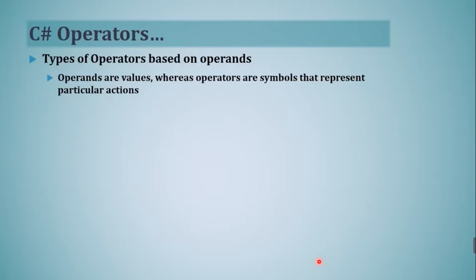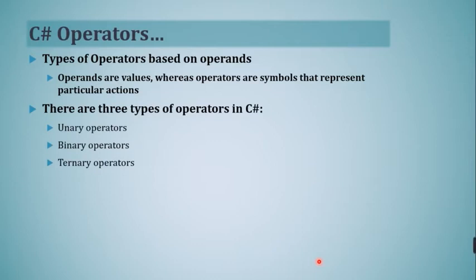Operators can also be differentiated based on their operands — the number of values they work on. Operands are values whereas operators are symbols that represent particular actions. In C#, there are three types of operators on the basis of operands: unary operators, binary operators, and ternary operators.